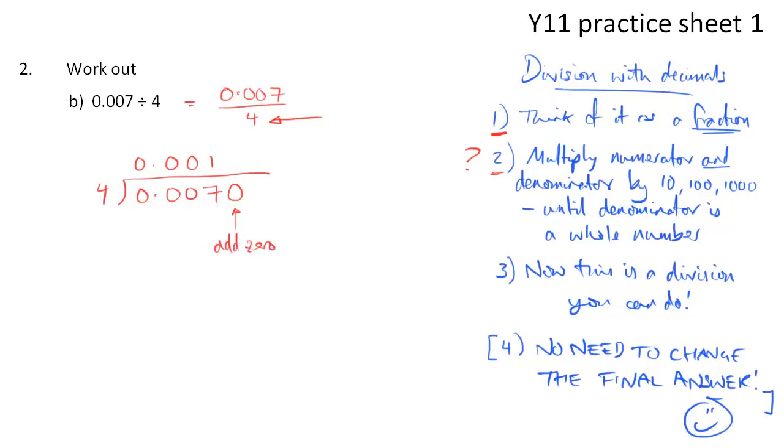4s into 7 goes once, remainder 3, and the 3 goes there. So now we're looking at 4s into 30, and again, that doesn't go exactly. There's going to be a remainder, so we need to put another 0 on there. 4s into 30 goes 7 times, because 4 times 7 is 28. So we put the 7 in there, but the remainder is going to be 2. And finally, 4s into 20 goes in exactly 5 times, so there's no more remainders. We don't need any more 0s. And we've worked out our answer. So the answer is the top line there, 0.00175.